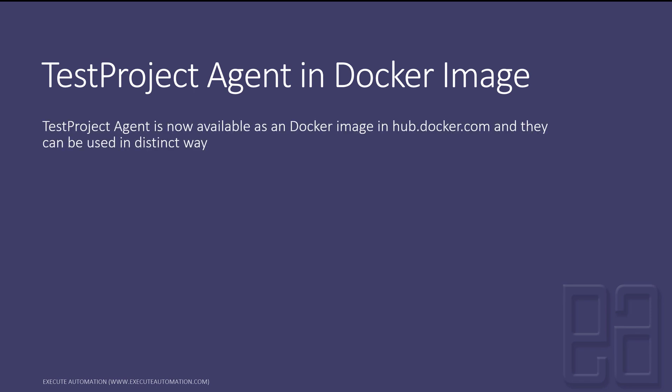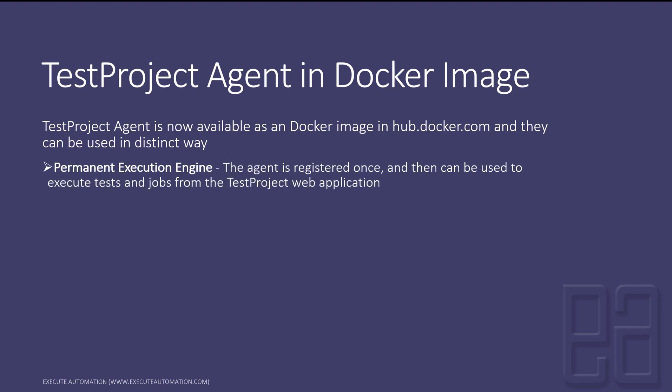The test project agent is now available as a Docker image on hub.docker.com and it can be used in distinct ways. We can execute the test project agent in a permanent execution engine where the agent is registered once and then can be used to execute tests and jobs from the test project web application.